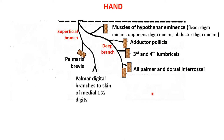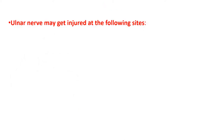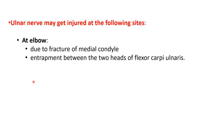Now let us look at the injury to ulnar nerve. The common sites where the ulnar nerve may get injured: first is at the elbow, where it may get injured due to fracture of the medial epicondyle, because the ulnar nerve passes behind the medial epicondyle. Second is entrapment between the two heads of flexor carpi ulnaris — the humeral head and the ulnar head — as the nerve passes between these two origins to reach the anterior compartment of the forearm.